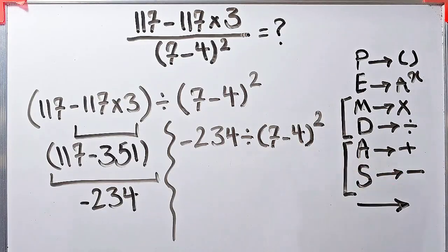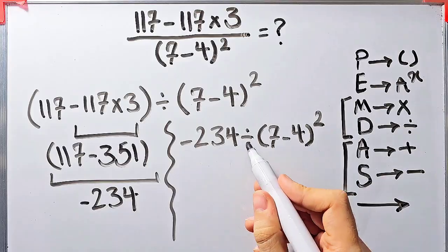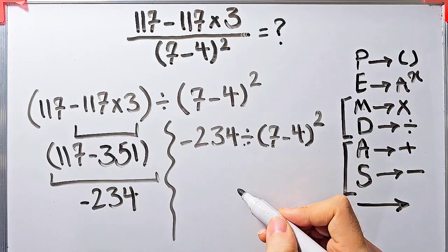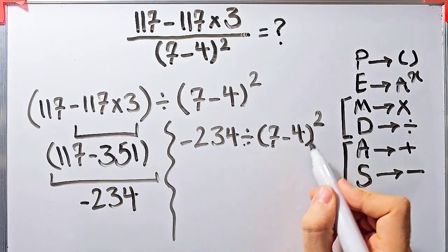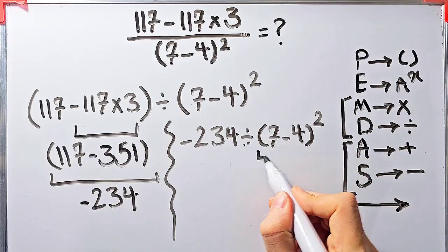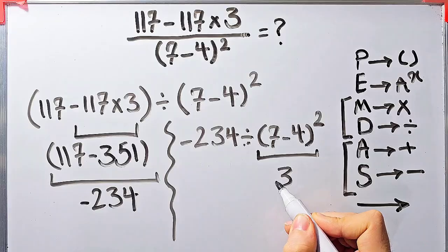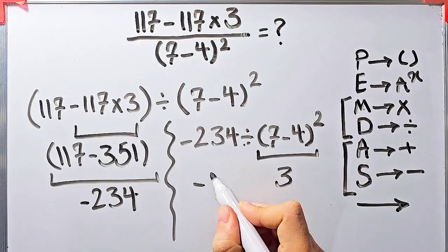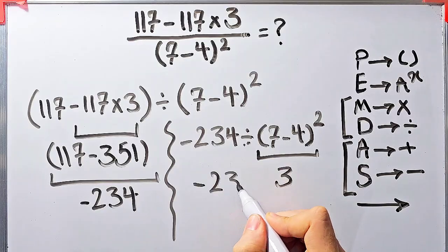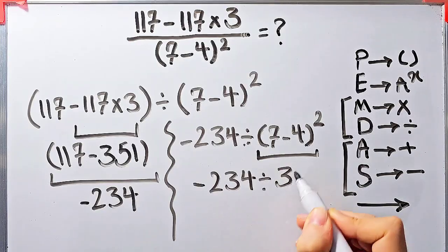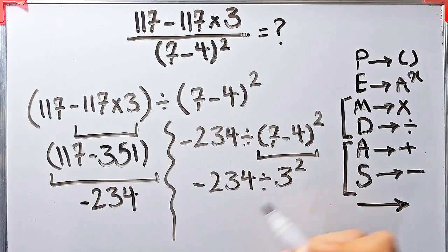Now we have division, parentheses, and exponent. In this step we simplify the parentheses. 7 minus 4 equals 3. Now we have negative 234 divided by 3 to the power of 2.